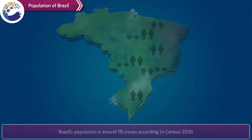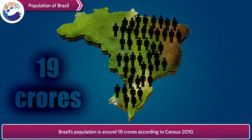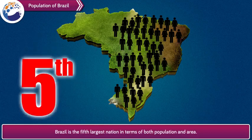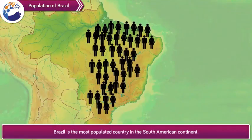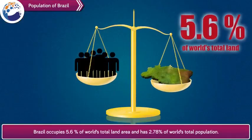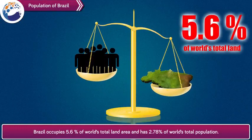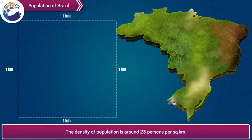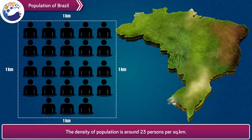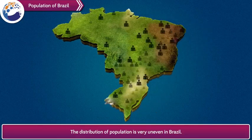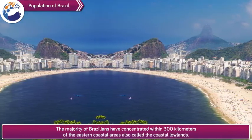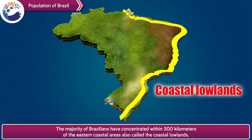Population of Brazil: Brazil's population is around 19 crores according to Census 2010. Brazil is the fifth largest nation in terms of both population and area, and is the most populated country in the South American continent. Brazil occupies 5.6% of world's total land area and has 2.78% of world's total population. The density of population is around 23 persons per square kilometer. The distribution of population is very uneven in Brazil. The majority of Brazil's population is concentrated within 300 kilometers of the eastern coastal areas, also called the coastal lowlands.